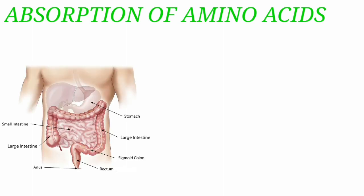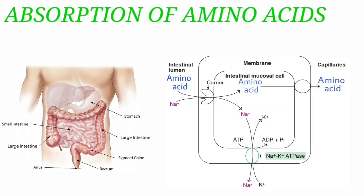Coming to absorption of amino acids. Absorption of amino acids occurs mainly in the small intestine and is an energy-requiring process. Amino acids are absorbed by a sodium-dependent active process linked with the transport of sodium ions. As the sodium ions diffuse along the concentration gradient, the amino acids also enter the intestinal cell. Both sodium and amino acids share a common carrier and are transported together into the intestinal cell, and the energy is supplied indirectly by ATP.